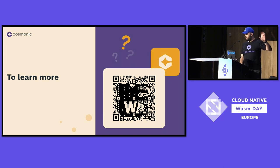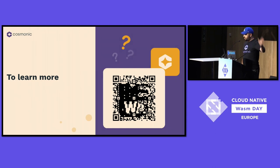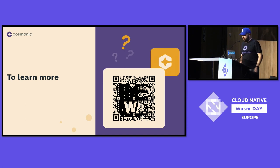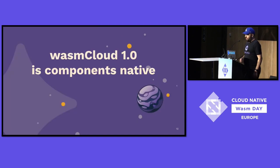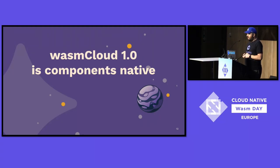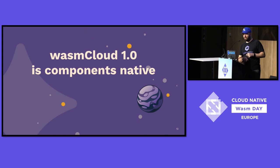To learn more about the component model, there's a QR code linking to a talk by Luke Wagner — the guy who invented WebAssembly and a big leader in the space who gives a very in-depth explanation of all this. Highly recommend watching it. Also, WasmCloud 1.0, which we're releasing now with alpha branches out, is components-native — everything follows all the standards, meaning anything you use on it can be used with anything else that uses the standards.